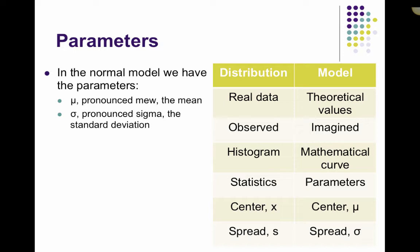So if we take a look at the table to the right, we have the distribution and then the model. So in the distribution, we're using real data. Those real data were observed, we used them to create a histogram, and then we calculated statistics where our center is the mean, and that should have a bar over the x, so it would be x-bar. And our spread is our standard deviation, which is s.